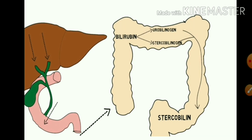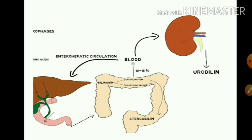The liver processes bilirubin into the colon. In the colon, microorganisms break it into two elements: urobilinogen and stercobilinogen. These two compounds are produced. Stercobilinogen remains in fecal matter, giving feces their yellow color. About 10–15% of urobilinogen is reabsorbed into the blood via enterohepatic circulation, and the kidney excretes the remainder. This completes the bilirubin processing cycle.